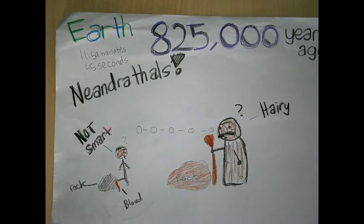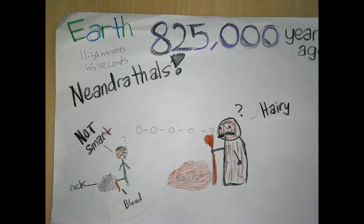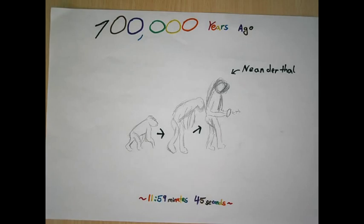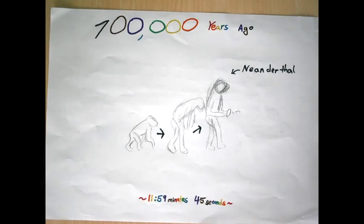825,000 years ago, at 11:59 and 45 seconds, this is when the Neanderthals existed. They were not smart and very hairy. Around 700,000 years ago, which is also 11 hours 59 minutes and 45 seconds, humankind and Neanderthal kind began diverging. They had craft tools.